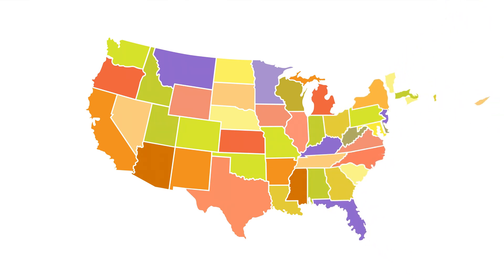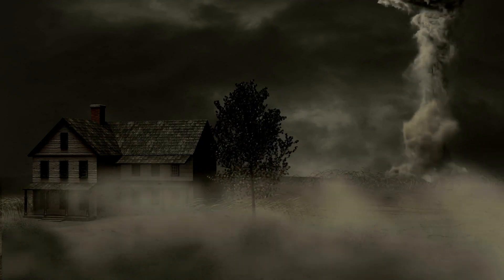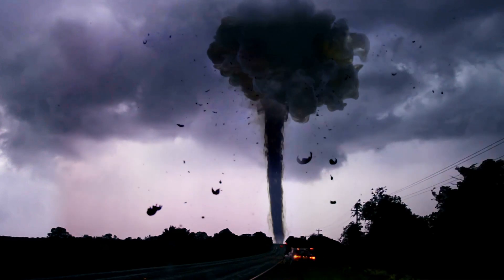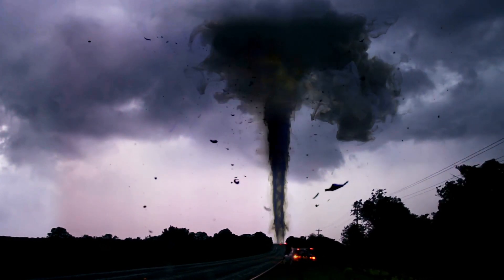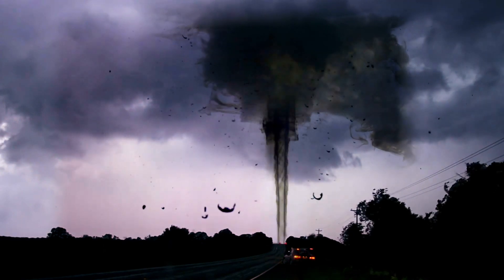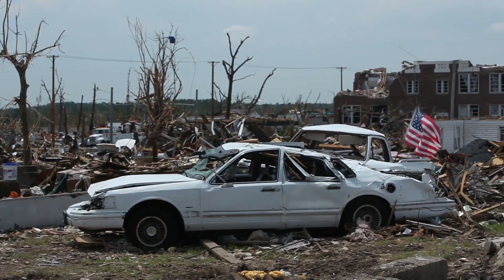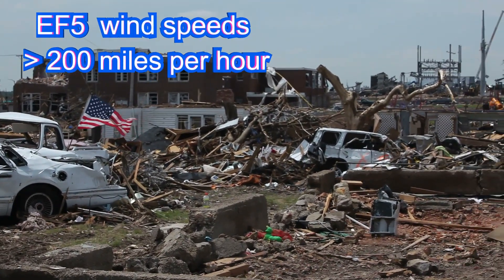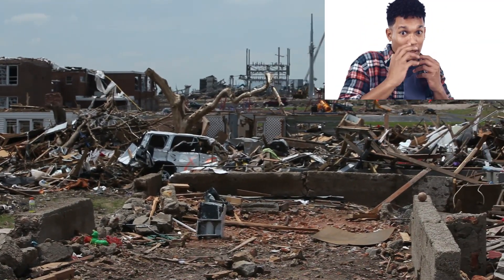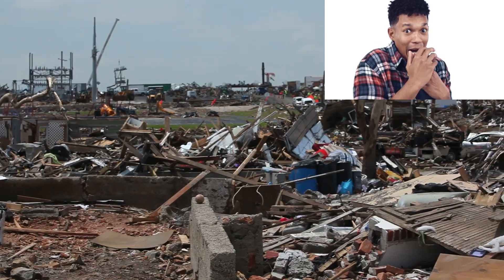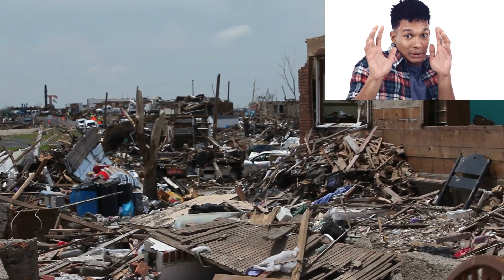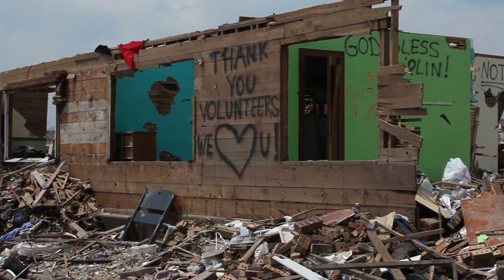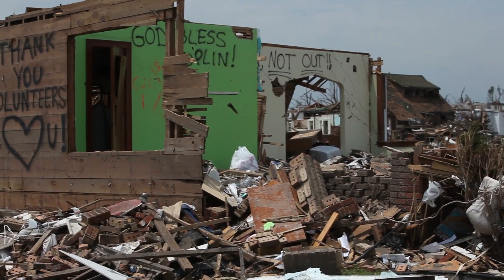So what makes tornadoes so destructive? It's their wind speeds. Tornadoes are ranked on the Enhanced Fujita Scale, or EF Scale, which ranges from EF0 to EF5. EF0 tornadoes are the weakest, with winds around 65 to 85 mph, still enough to cause damage. At the other end of the spectrum, EF5 tornadoes have wind speeds exceeding 200 mph, capable of leveling entire neighborhoods. The most dangerous aspect of a tornado isn't just the wind — it's the debris it picks up. Pieces of buildings, trees, and even cars can become deadly projectiles, making tornadoes incredibly hazardous.